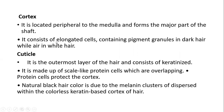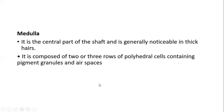The cortex consists of elongated cells containing pigment granules in dark hair. In white hair, the cuticle is the outermost layer and consists of keratinized pigments made up of scale-like protein cells which are overlapping; these protein cells protect the cortex. The naturally black hair color is due to melanin clusters dispersed within the colorless keratin base of the cortex. The medulla is the central part of the shaft, generally noticeable in thick hairs, and is composed of two or three rows of polyhedral cells containing pigment granules and air spaces.